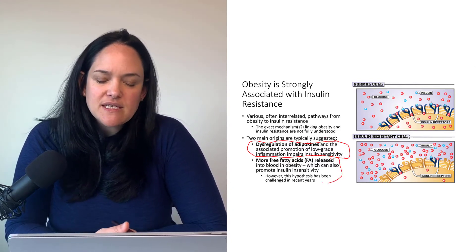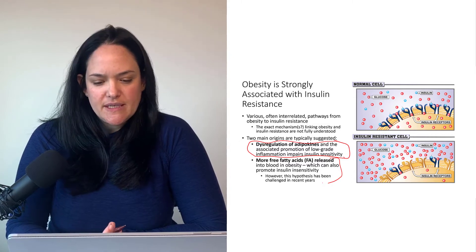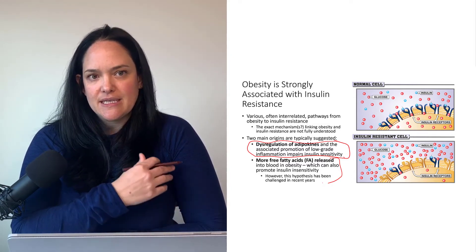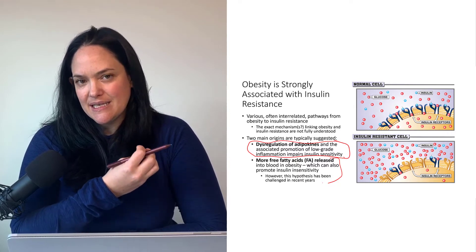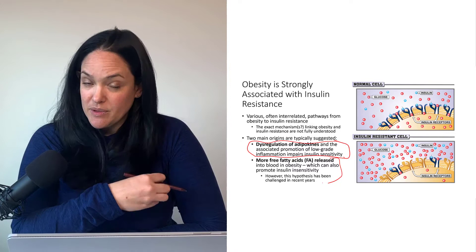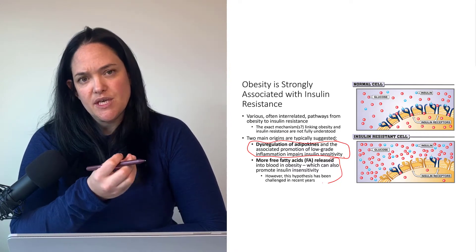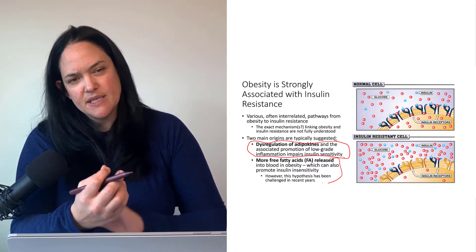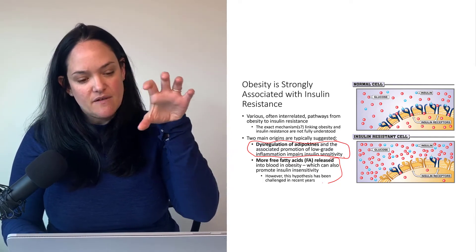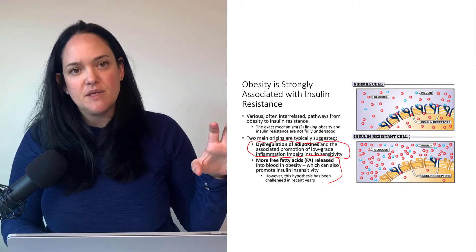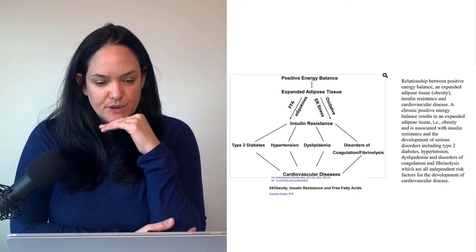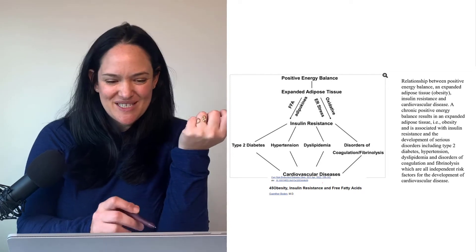Another hypothesis — which has been challenged more in recent years — is that having more free fatty acids in the blood in obesity might be associated with increased insulin resistance. We'll look at that more as we move forward, but we'll start this conversation with the dysregulation of adipokines and how that can potentially promote type 2 diabetes through insulin resistance.